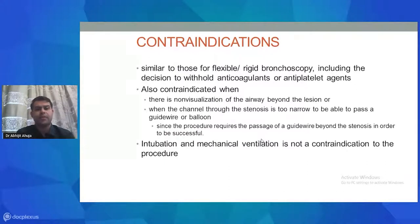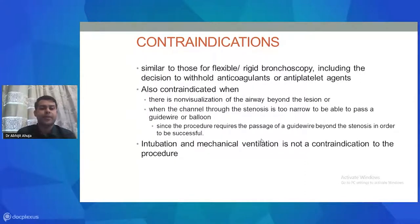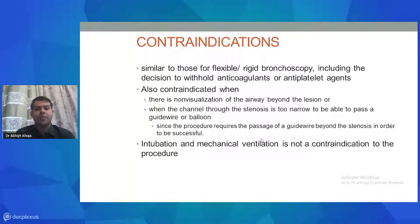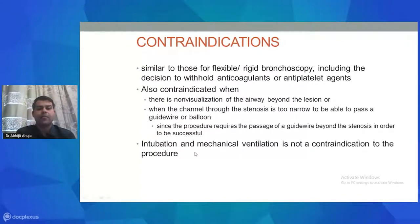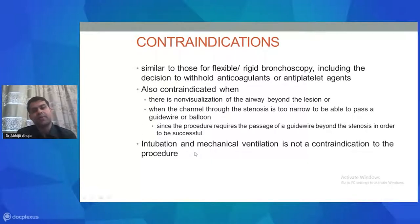Contraindications are similar to those for flexible or rigid bronchoscopy, including the need to withhold anticoagulants and antiplatelets. The procedure is also contraindicated if the airway beyond the lesion cannot be visualized, or if the channel through the stenosis is too narrow to pass a guide wire or balloon. Since the procedure requires guide wire passage beyond the stenosis, visualization beyond the lesion is essential. Notably, intubation and mechanical ventilation are not contraindications — the patient can actually be extubated on the table once therapy is delivered.